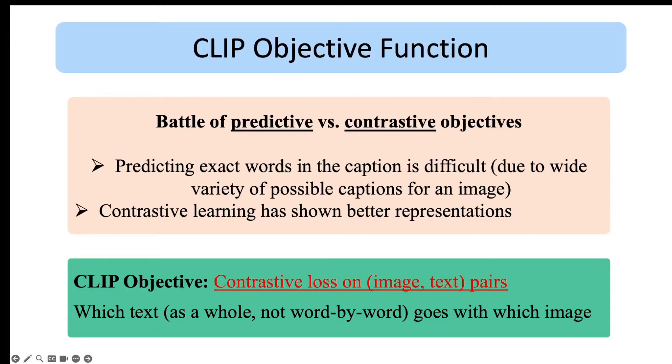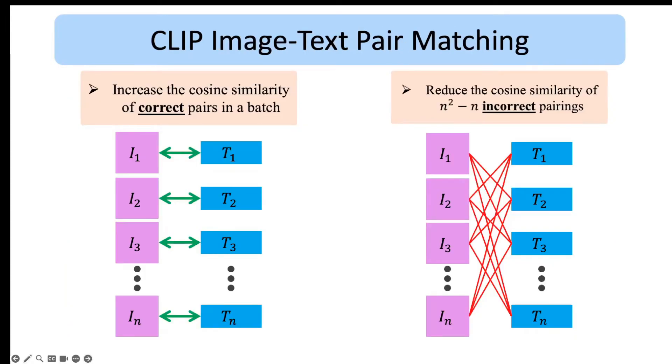Given a batch of image-text pairs, CLIP's objective is to find the correct pairings between images and texts in the batch. In other words, which text matches with which image with higher probability. Assume we have a batch of image-text pairs, so that means we have images I1 to In and text T1 to Tn. On the left it shows the correct pairings in the batch, so each image is correctly paired with the corresponding text.